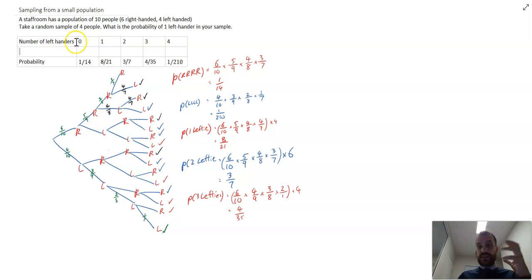Number of left-handers in the sample of four could be zero, one, two, three, or four. And the probabilities of each of those happening are one in 14, eight in 21, three in seven, four in 35, and a whopping one in 210.